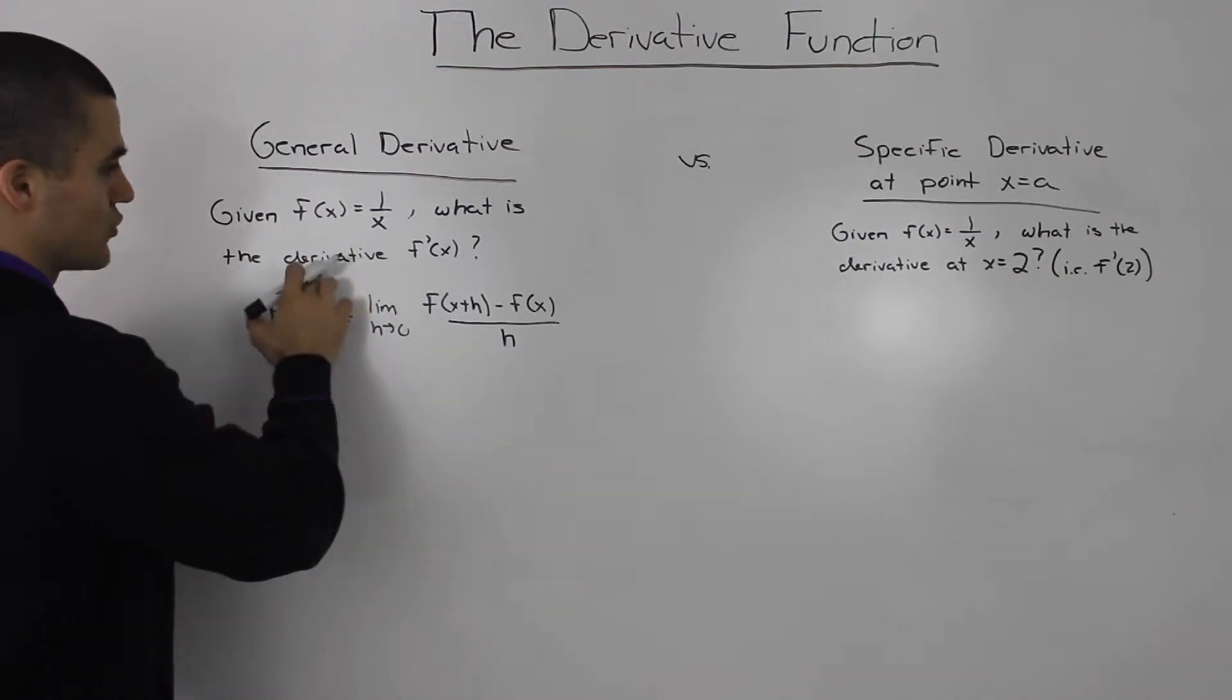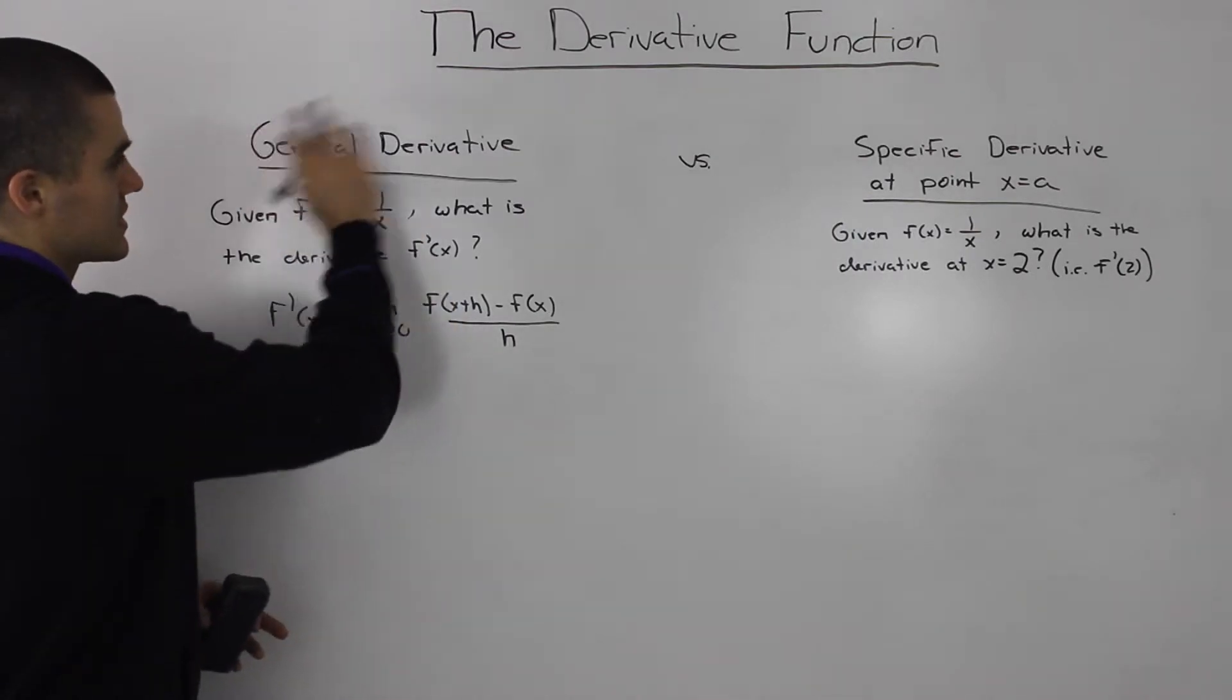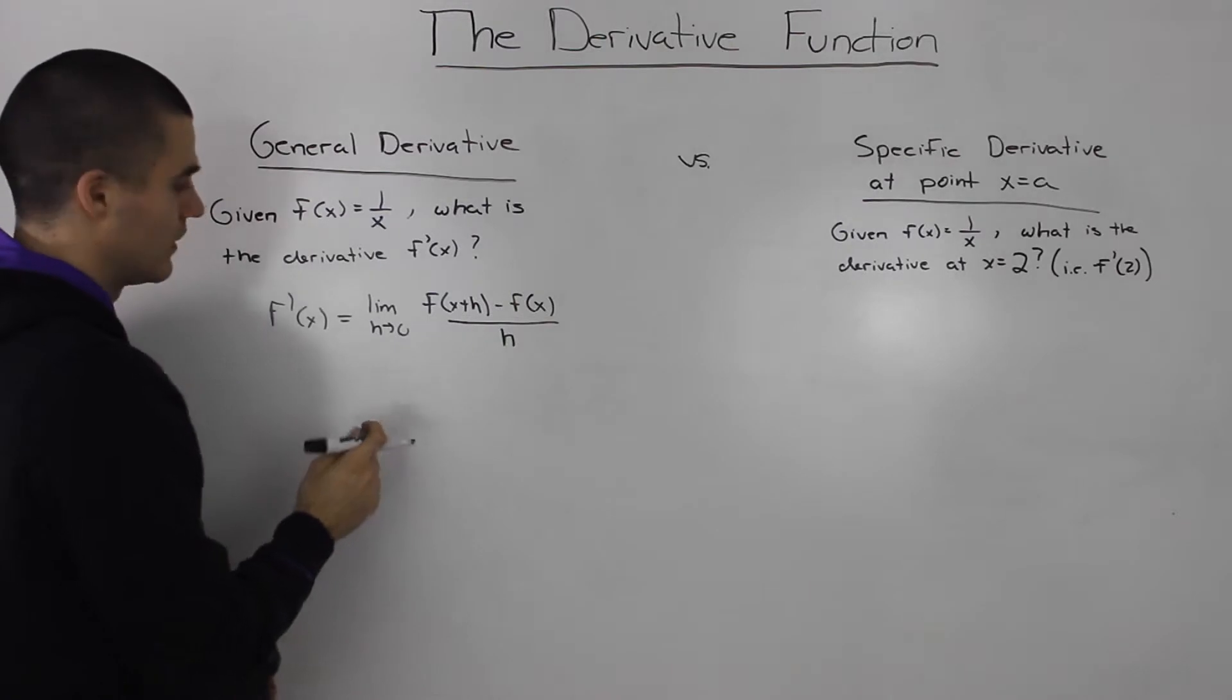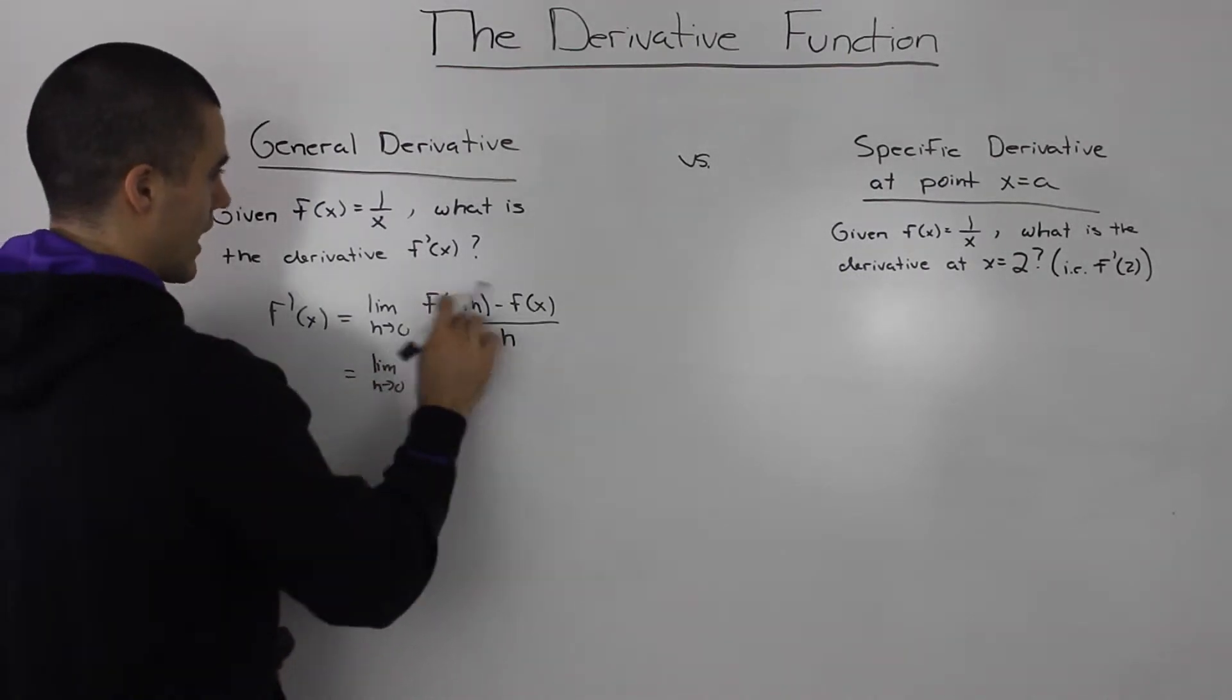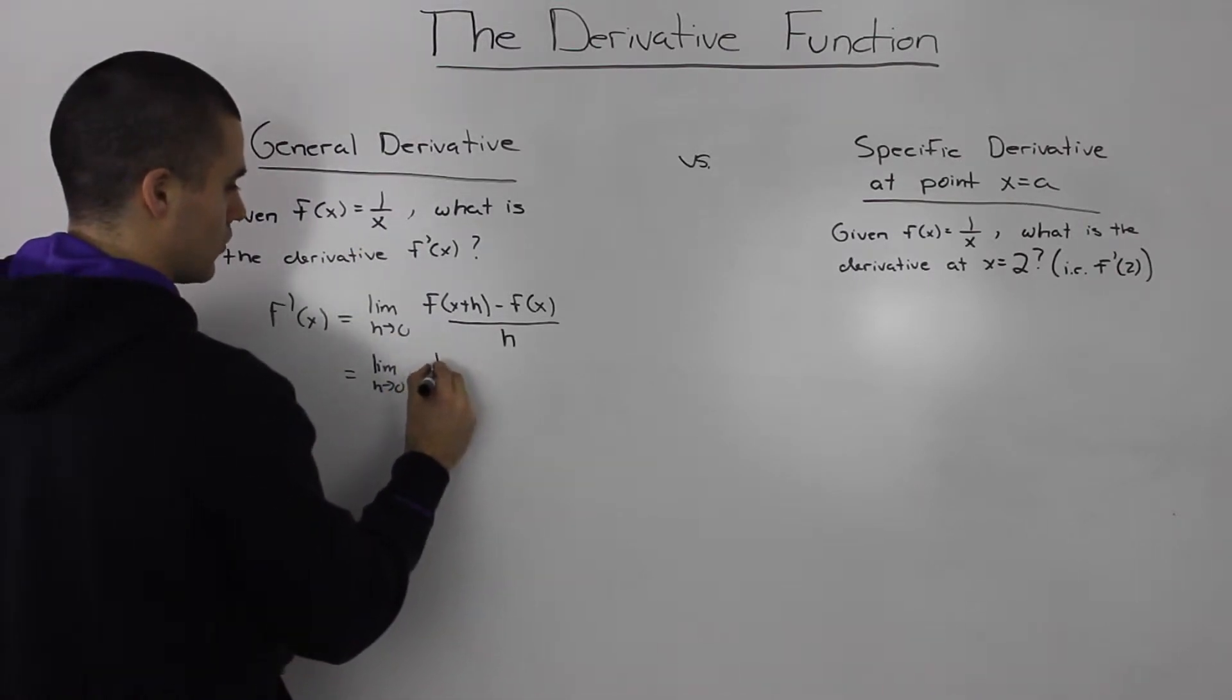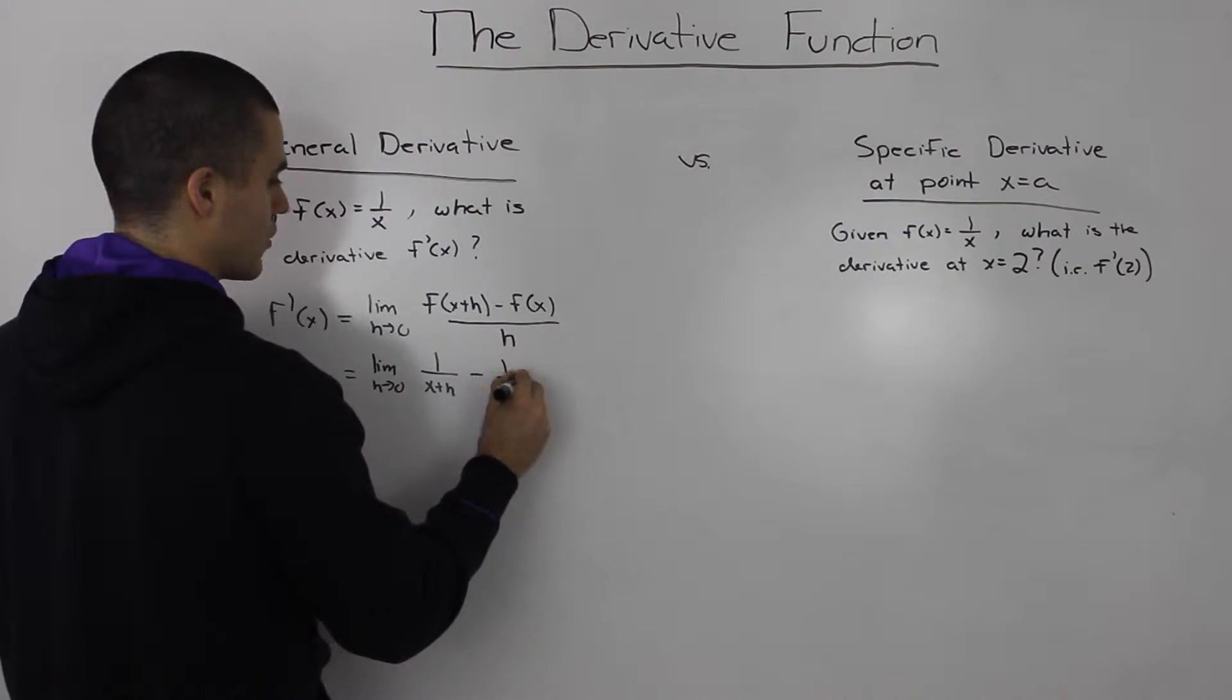They're just asking for the derivative. And whenever they don't ask it at a specific point, they're asking just for the general derivative. So you make it in terms of x. You don't put a point here. So if we rewrite this and sub in x plus h for x in our function, we'll get 1 over x plus h minus 1 over x, all over h.